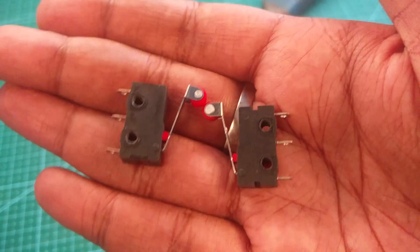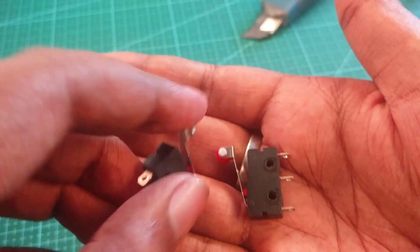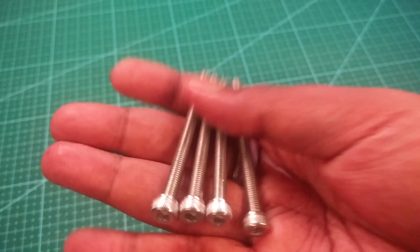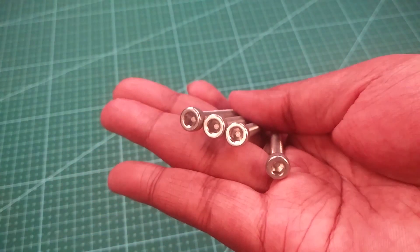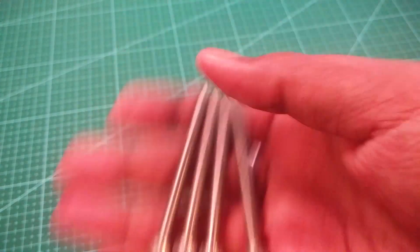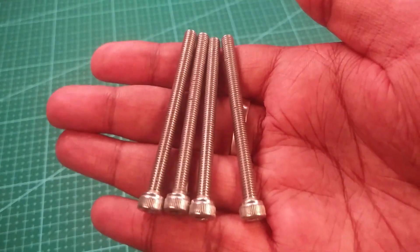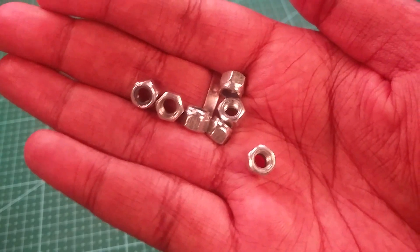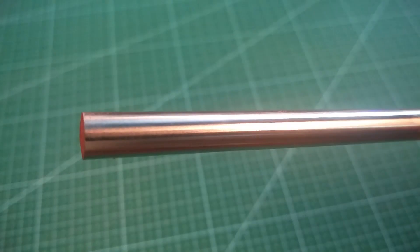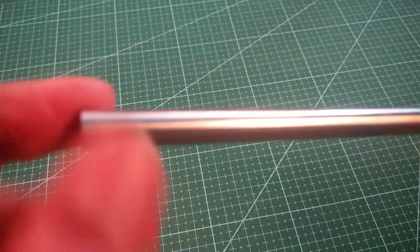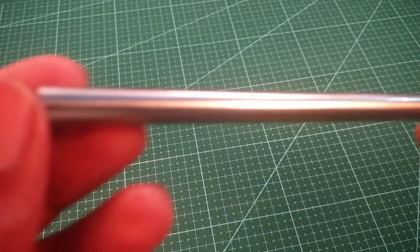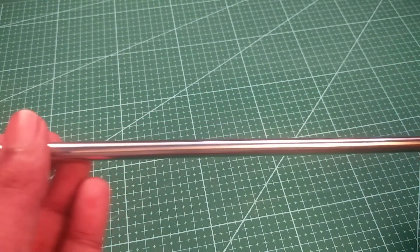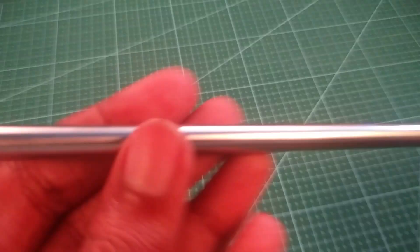We are using roller end limit switches for the X and Y end stop for homing purposes. We are using 4 M5 70mm long bolts for holding two central chariots as well as the bearing together. We are using M5 lock nuts which will secure the joints if there is any vibration. We are using 8mm rod which is chromium plated and we bought 2 1-meter rods and we will half it in size and we will use 4 500mm rods.